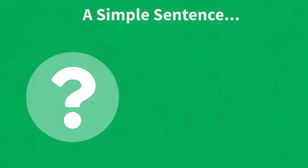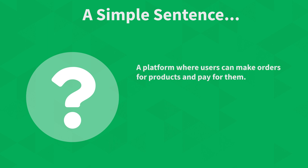Let's say you're building an online store where people can make purchases and view products. A simple sentence that defines the core functionality of our online store is: a platform where users can make orders for products and pay for them. A simple sentence, but from it we can already start seeing the relations between the different types of tables in our application.